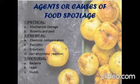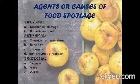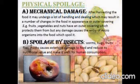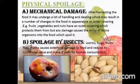Physical spoilage includes mechanical damage and damage by rodents and pests. Chemical spoilage includes chemical contamination, rancidity, and enzymatic and non-enzymatic reactions. Microbial spoilage includes spoilage due to bacteria, yeasts, and molds. Physical spoilage due to mechanical damage: after harvesting, the food may undergo a lot of handling which may result in changes in the food's appearance or outer covering. For example, fruits, vegetables, and nuts have an outer covering that protects them; damage to this causes entry of microorganisms into the food, which spoils it.